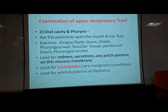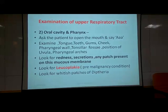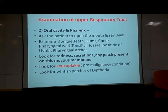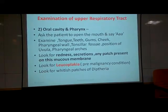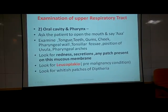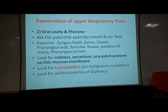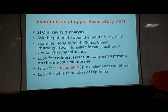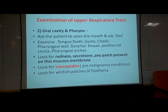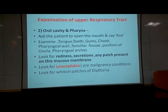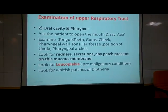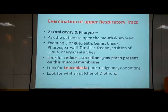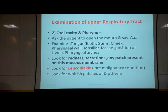Next, we are going to see the oral cavity and pharynx. We will ask the volunteer to say 'A,' and putting the torch in, we are going to see the teeth, tongue, gums, cheeks, pharyngeal wall, tonsillar fossa, position of the uvula, and pharyngeal arches. We check whether the part is red, whether there are secretions, and whether there are any patches — because some patches are very dangerous, such as leukoplakia, a pre-malignancy condition, especially in tobacco-chewing patients. Also, white patches of diphtheria should be checked, though it is now outdated.